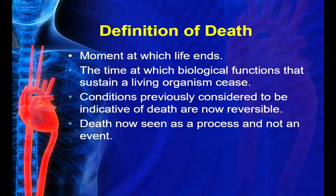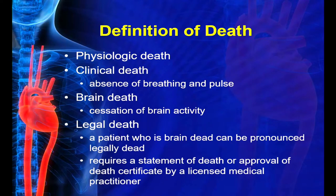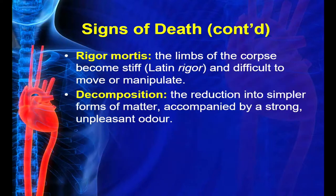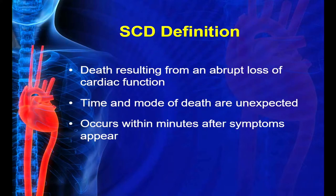What is death? It's the moment at which life ends, when biological functions sustaining a living organism cease. Conditions previously considered indicative of death are now reversible, so we think of death not as an event but as a process. We have physiologic death, clinical death (absence of breathing and pulse), brain death, and legal death — where a brain-dead patient can be pronounced legally dead requiring a statement by a licensed medical practitioner. Signs include no breathing, no pulse, pallor mortis, livor mortis, algor mortis, then rigor mortis, and finally decomposition.